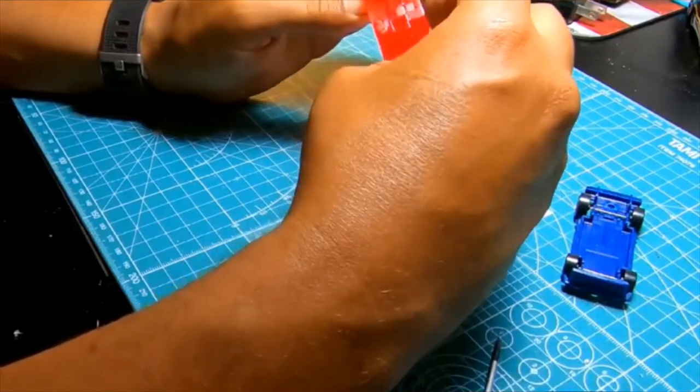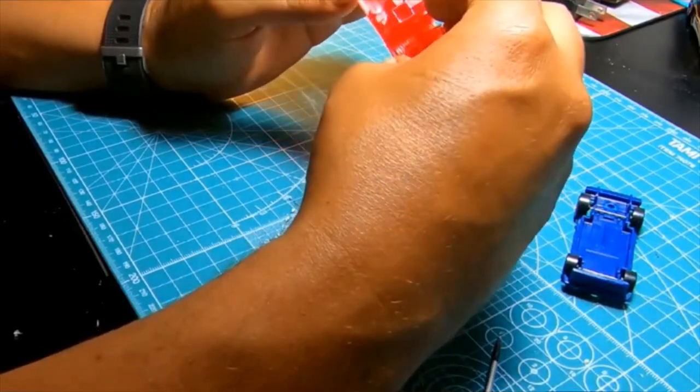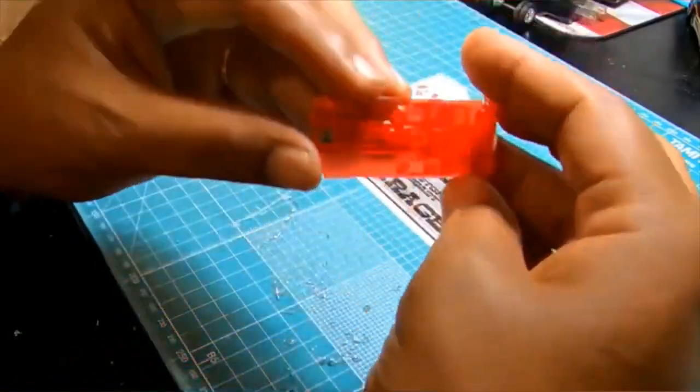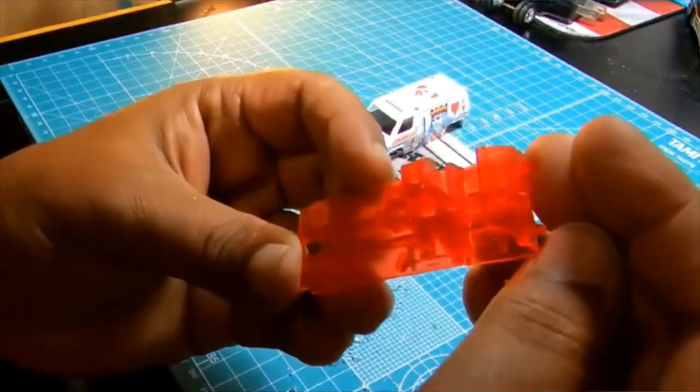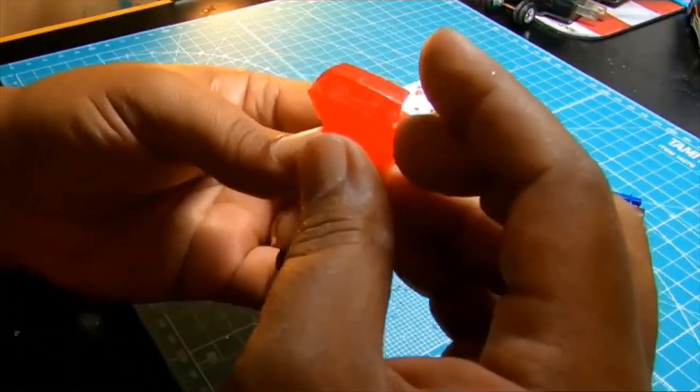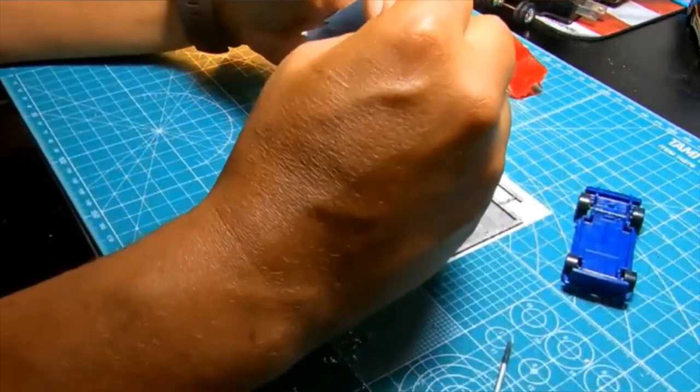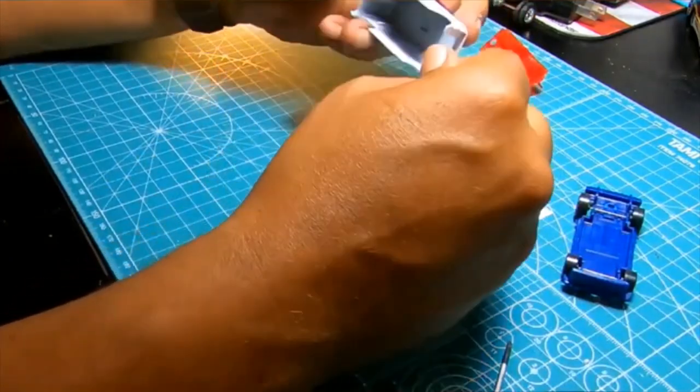So, the interior was one piece, the windshield and the interior part. And it sort of just hinges over, and you'll see a little bit later I made some changes to that.